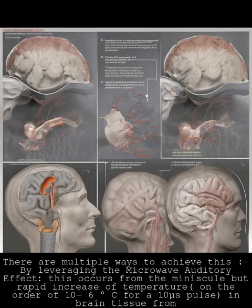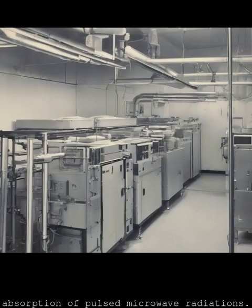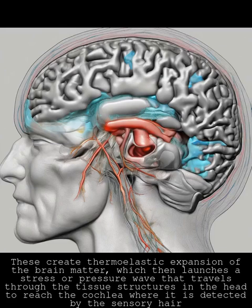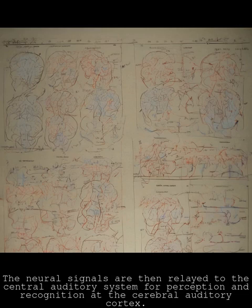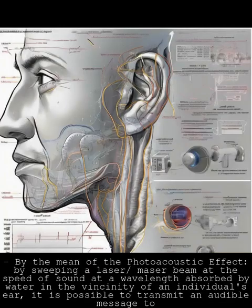This occurs from the minuscule but rapid increase of temperature — on the order of 10 microseconds — in brain tissue via absorption of pulsed microwave radiation. That thermal expansion of the brain matter launches a stress or pressure wave that travels through the tissue structures in the head to reach the cochlea, where it is detected by the cells there. The neural signals are then relayed to the central auditory system for perception and recognition at the cerebral auditory cortex.